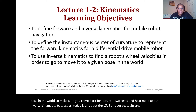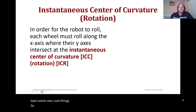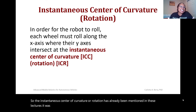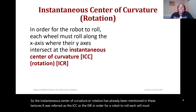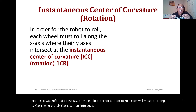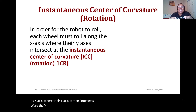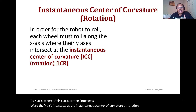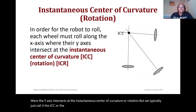The instantaneous center of curvature or rotation has already been mentioned in these lectures — it was referred to as the ICC or the ICR. In order for a robot to roll, each wheel must roll along its x-axis where the y-axis intersects at the instantaneous center of curvature or rotation, which we typically just call the ICC or the ICR.